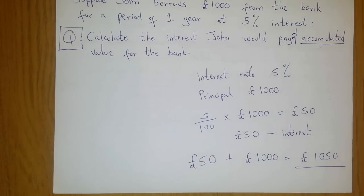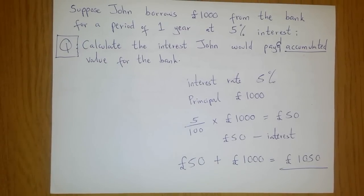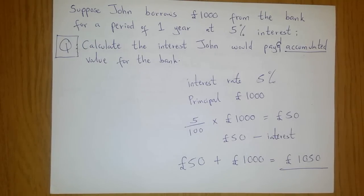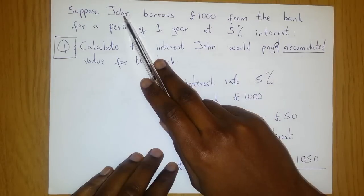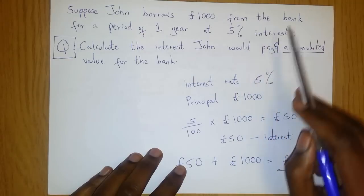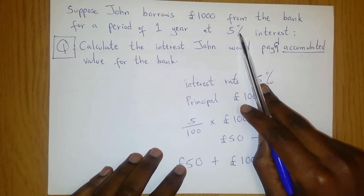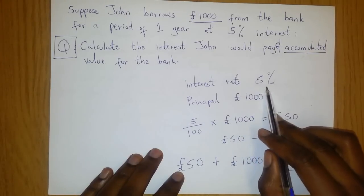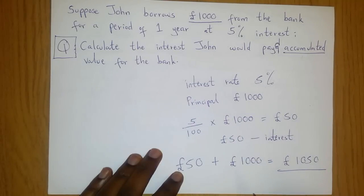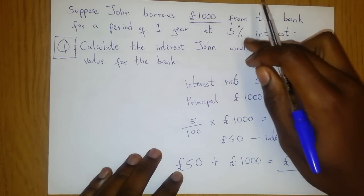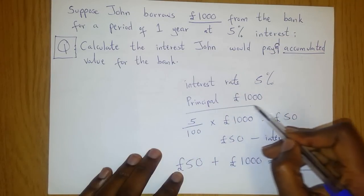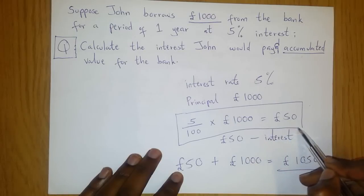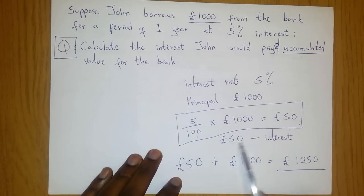Here is an example to help you understand this. Suppose John borrows a thousand pounds from the bank for a period of one year at 5% interest. Calculate the interest John would pay as well as the accumulated value for the bank. We can quickly see that John is the borrower while the bank is the lender. The rate of interest is 5% and the thousand pounds is the principal. At the end of the year, the interest John has to pay is 5% of the principal, which is 50 pounds.